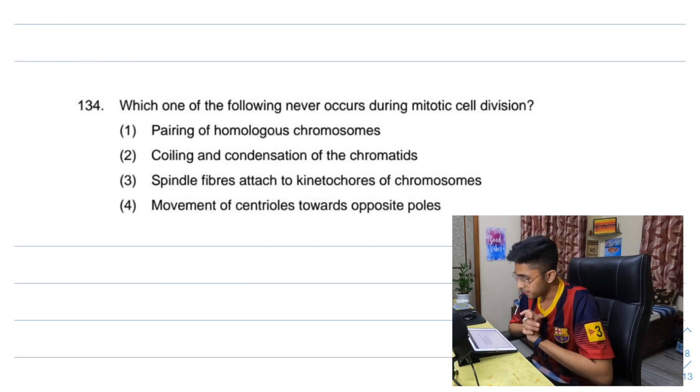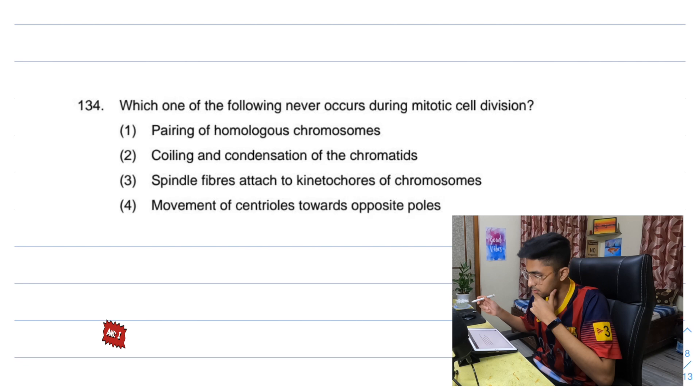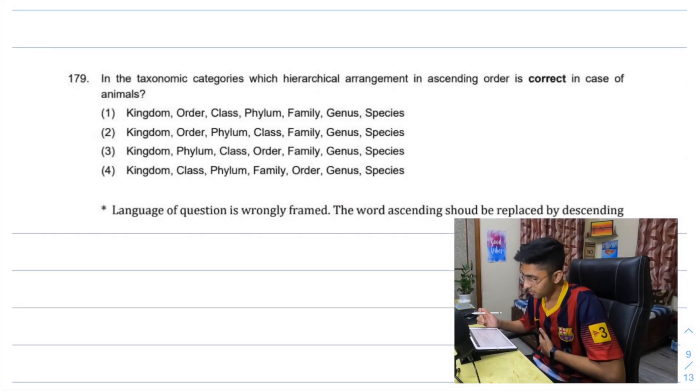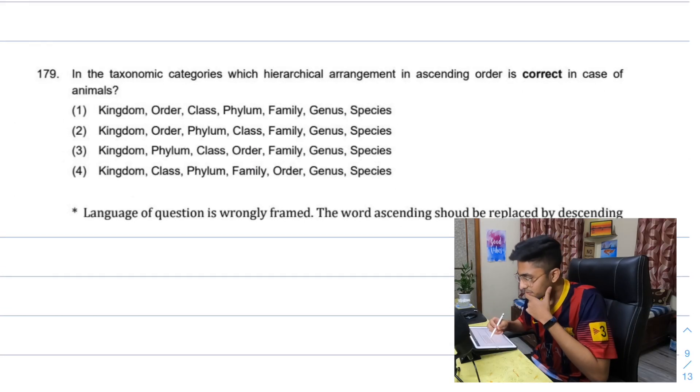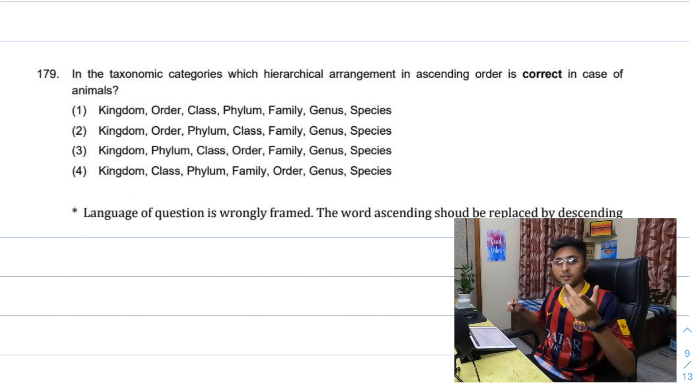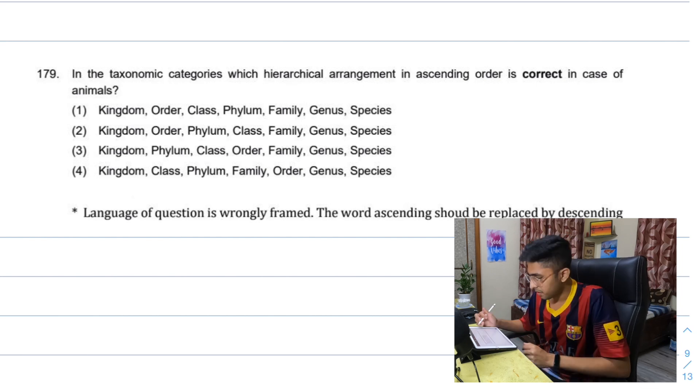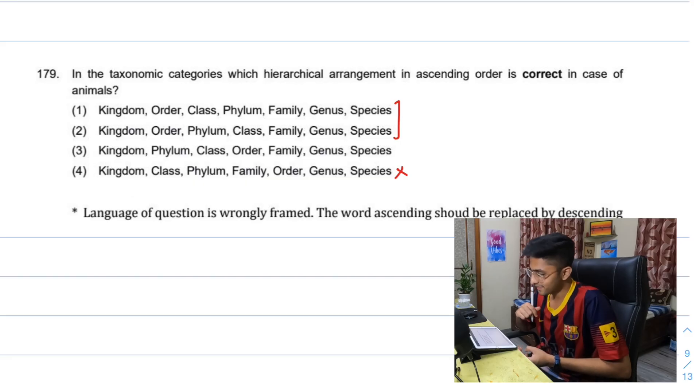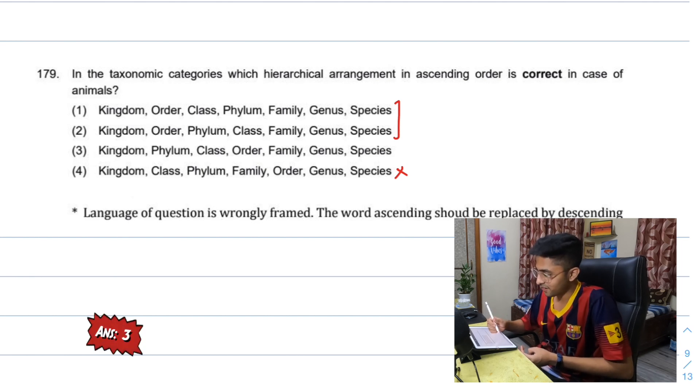Which one of the following never occurs during mitotic cell division? So it happens in meiosis. Taxonomic categories which hierarchical arrangement in ascending order is correct. Kingdom order - there was a mnemonic for this which I don't remember. Kingdom order and then I don't know, class phylum or phylum class. Phylum sounds bigger than a class. So I'll just go with phylum too. I hope my flings are going good.